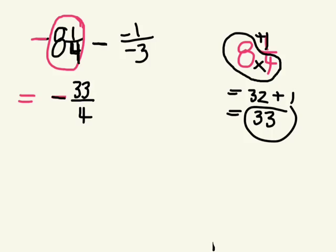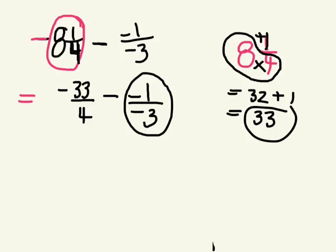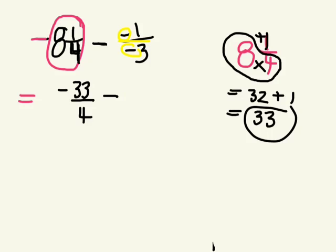We have negative 33 over 4 take away negative 1 over negative 3. Is there another way to rewrite this? When you have two negatives together — because the fraction bar means division — two negatives make a positive. So negative 1 over negative 3 is the same as positive 1 over positive 3. We can get rid of those negatives.